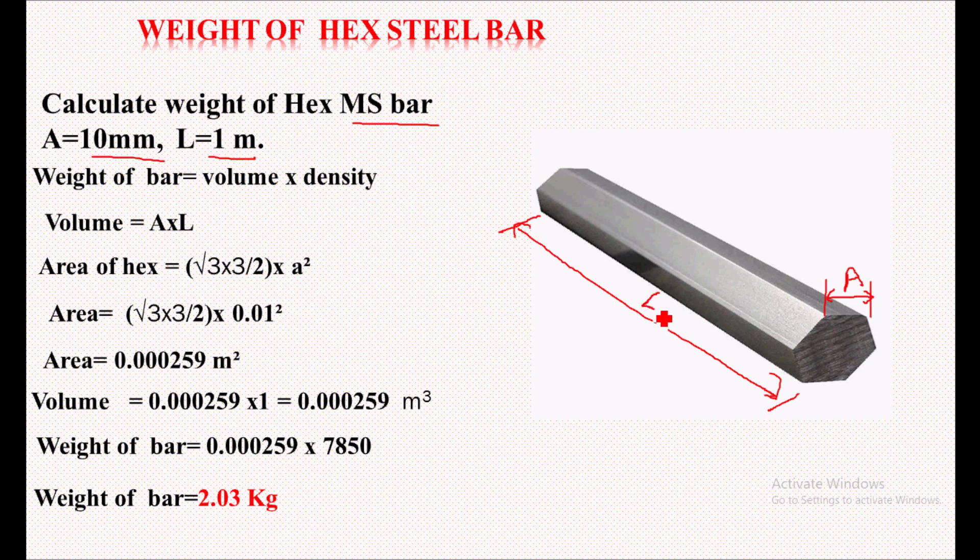Now, weight of this hexagonal steel bar is given by the general formula: volume times density for calculating the weight. So we'll calculate the volume of this hex steel bar. Volume is nothing but the area of this hexagonal shape into the length of this steel bar.